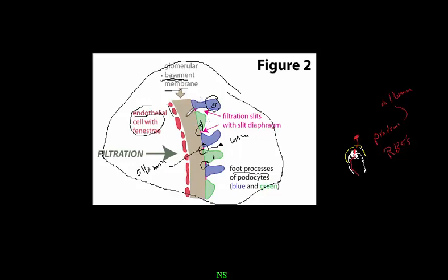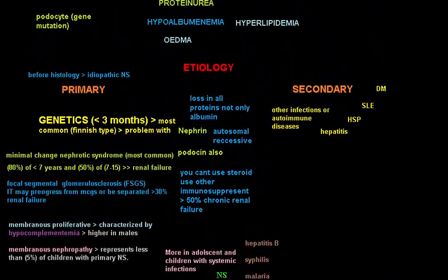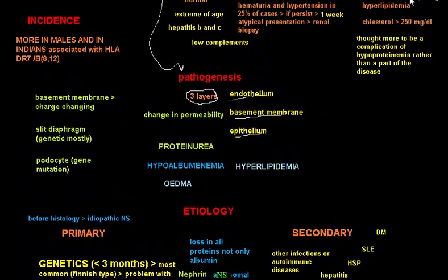In nephrotic syndrome, there is some kind of destruction to these mechanisms. We may have a problem with the endothelium of the glomerular wall, a problem with the basement membrane, or — most commonly — a problem with the podocytes and the slit diaphragms. When this occurs, we have leakage of protein, and this is what we call nephrotic syndrome.